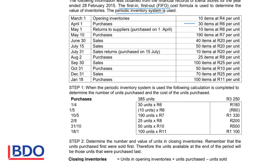The first purchase is 30 units at R180. Then there were returns of 10 units, which means we reduced the number of units and we reduced our purchase price. Then 190 units were purchased at R7 each, and we record what the total expense was. Then 25 units were purchased at R8, 50 items at R10, and 100 items at R11.